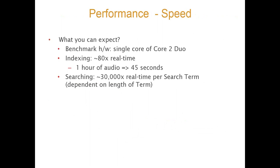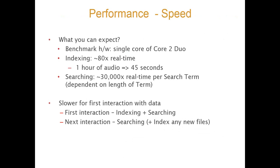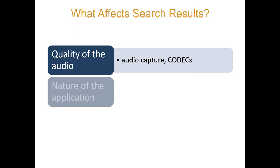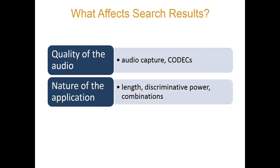Performance and speed: on a two-core dual processor, we can index at 80 times real-time — meaning 80 hours are indexed in one hour, and one hour of audio takes about 45 seconds. We can search at about 30,000 times real-time speed per search, depending on the length. That's way faster than listening manually. Even if you get 100 false hits, it will take much less time than listening to everything manually. The first interaction is a little slower as it indexes and searches; subsequent interactions just search. What affects search results: quality of the audio, how it was captured, the codec, the recording quality, the kilohertz frequency, the nature of the application, the length, and the quality of your search queries.